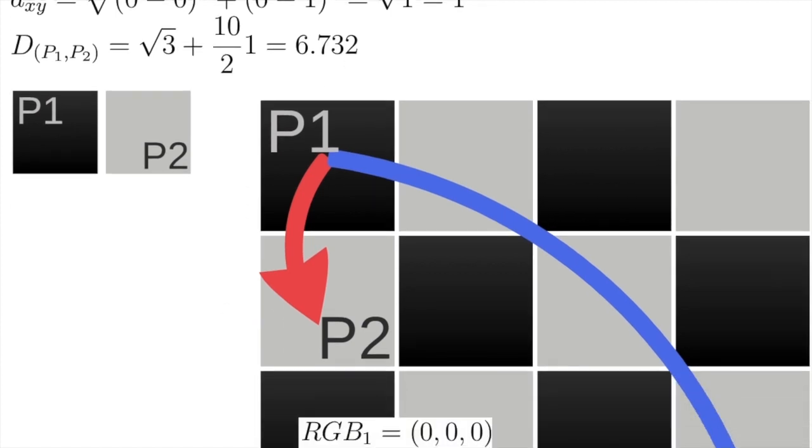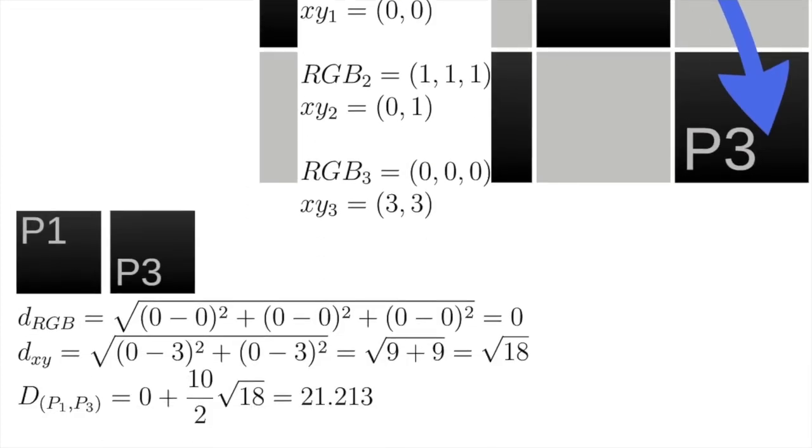And now the distance between pixel 1 and pixel 3. Recalling that they are both black pixels, so the distance in the RGB space will be equal to 0. But the distance in the XY space will be different, the square root of 18, considering the two values here. And if we apply the basic distance in the SLIC method, we will have a value of 21.213.